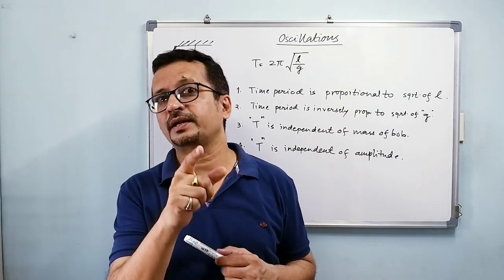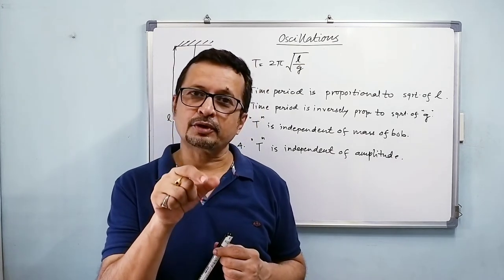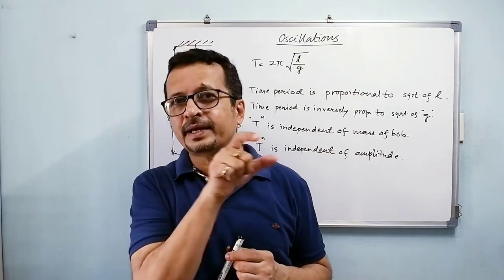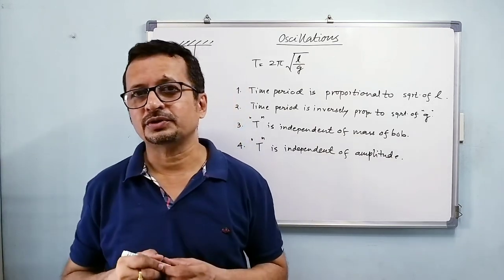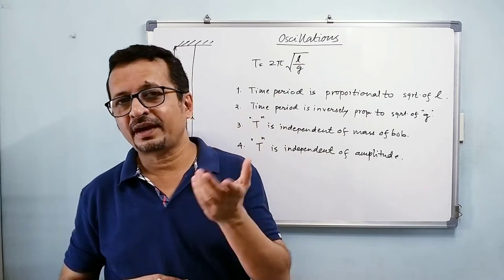If that angle is small, then sin θ would be approximately equal to θ, and then that would make it simple harmonic motion, and that would affect whatever we derived in the due course.